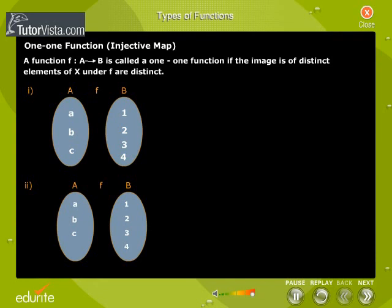One-to-one function or an injective map. A function f: A → B is called a one-to-one mapping if every element of f of A does not have more than one pre-image. Let us understand the one-to-one function with these examples.